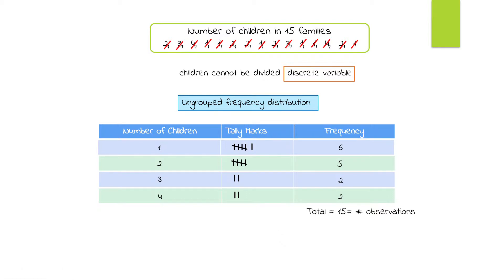Now we can say something about the data — that is the whole point of doing a frequency distribution. We can say the maximum number of families have one child, because that row has the maximum frequency.